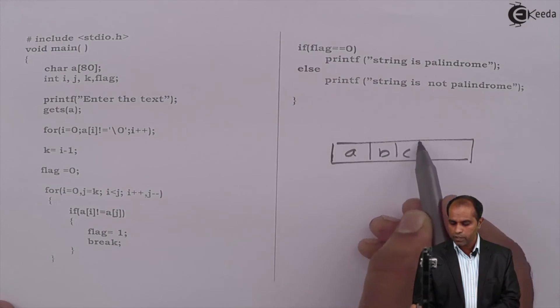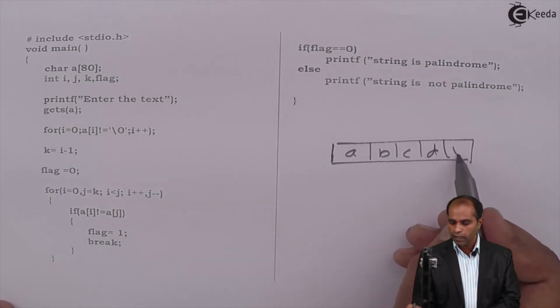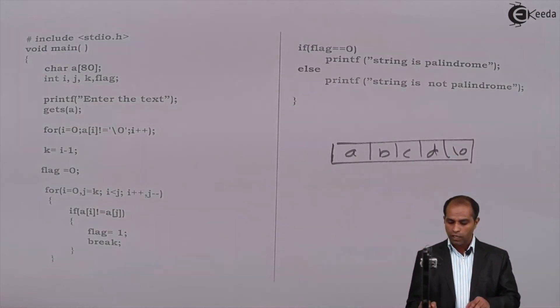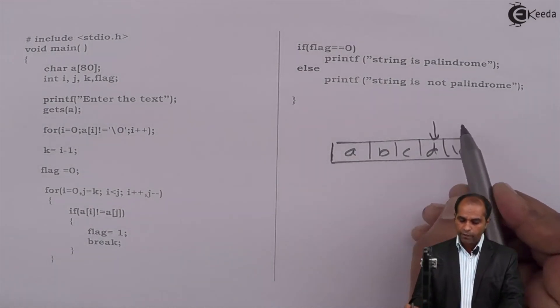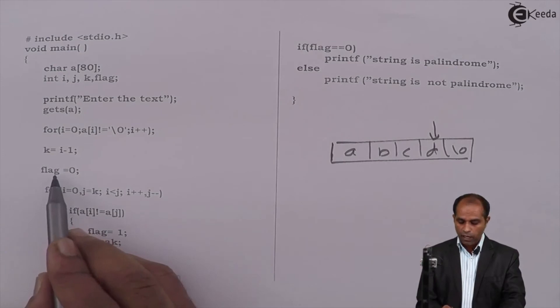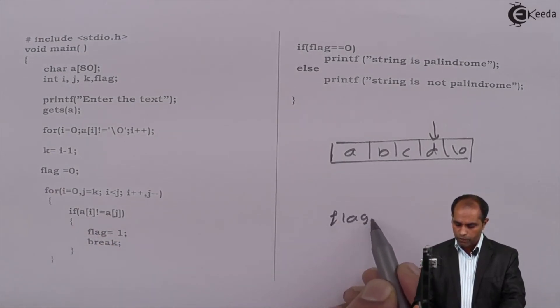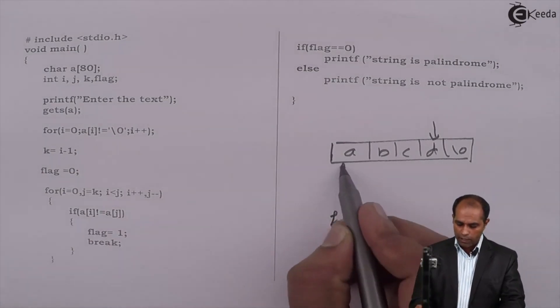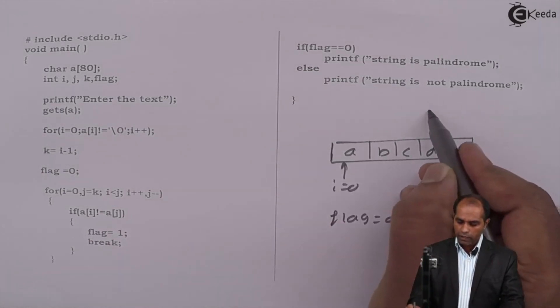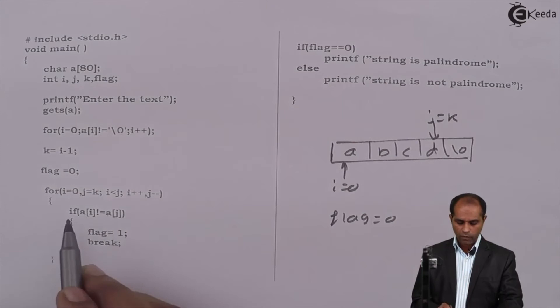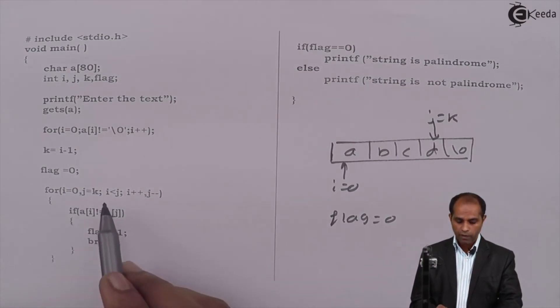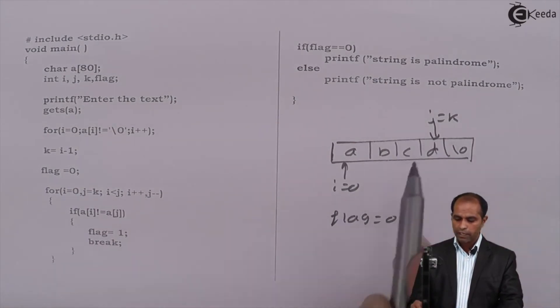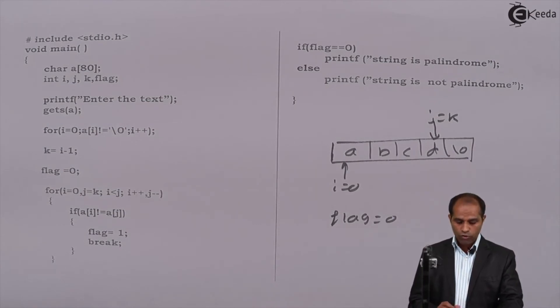So I have a, b, c, d, \0. So here I have this particular k being pointed at the last character. I'll take a variable flag as zero. Now I'll go with i=0 and j=k. i less than j - true, true in the sense go ahead to the comparison.